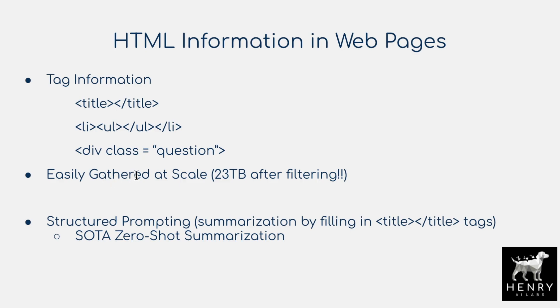They can easily gather this data at scale. After filtering, they end up with 23 terabytes of data. And it's really useful for zero-shot summarization, in which they set a new state of the art by filling in these title tags.